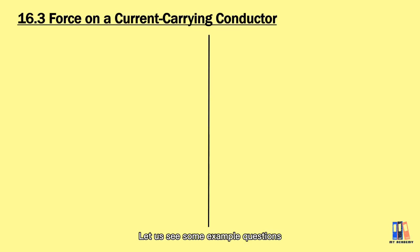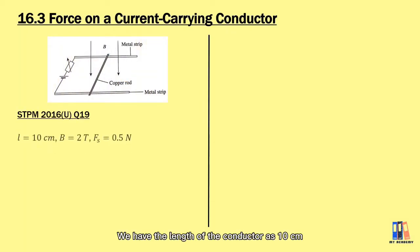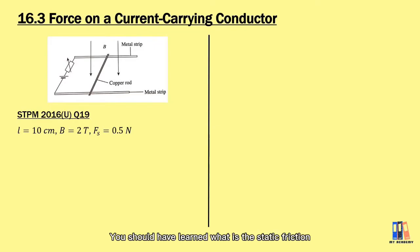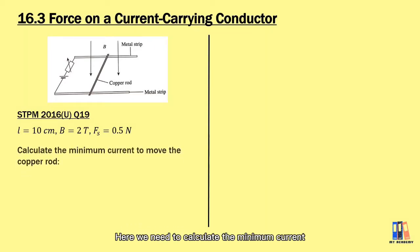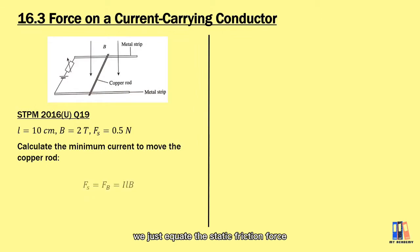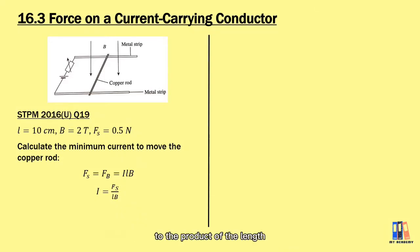Let us look at some example questions. This is a past year SPM question shown in the diagram. The length of the conductor is 10 centimeters, the magnetic flux density is 2 tesla downward, and the static friction force is 0.5 Newton. You need to overcome the static friction force to start moving the conductor. To find the minimum current to move the copper rod, we equate the static friction force to the magnetic force: F_static = I·L·B. The current equals the ratio of the static friction force to the product of length and magnetic flux density, giving a current of 2.5 amperes.